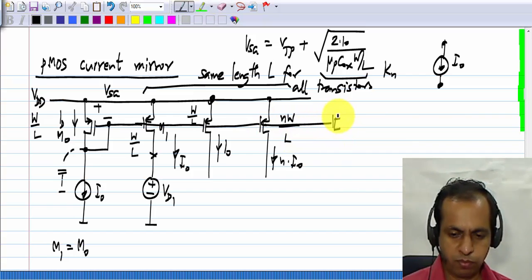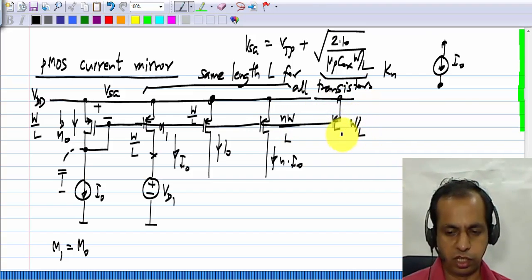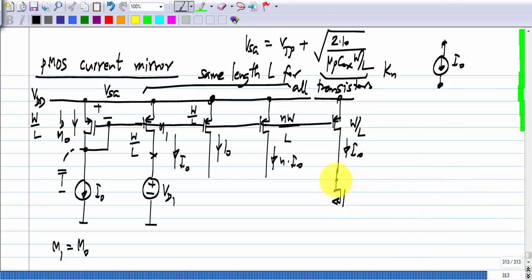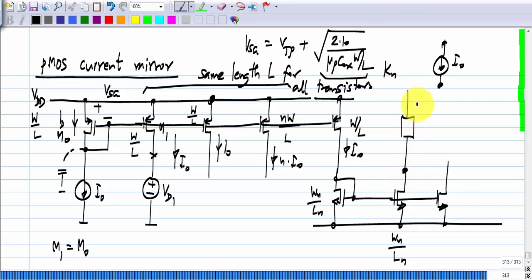Let us say you take one of these copies, let us say this is W by L. So, a current I naught will flow, if it is in saturation region, and you realize an NMOS current mirror, and as many copies of it as you please. Let us say this is W n by L n, if you have the same dimensions, and this transistor is in saturation, something has to be connected here. I will just show it as some load. As long as it is in saturation, this current will be I naught.